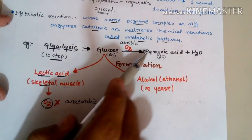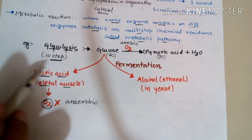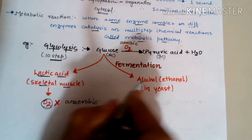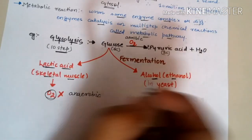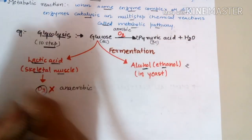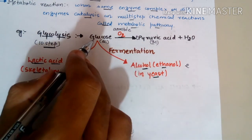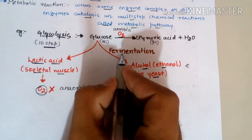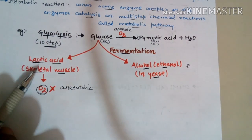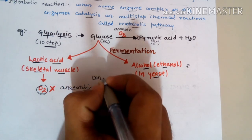In yeast, an anaerobic single-celled organism, glucose is converted into ethanol (a 2-carbon alcohol) through fermentation. Thus, the same substrate — glucose — can be converted into different products (pyruvic acid, lactic acid, or ethanol) depending on the enzymes involved or the environmental conditions present.